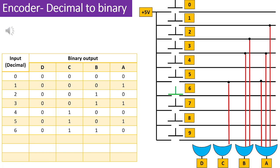Now, suppose we press switch 6, causing it to activate the line on the other side of the switch, resulting in a logic 1. However, given that the binary representation of decimal 6 is 0110 in a 4-bit format, the OR gates with their outputs labeled as input C and B are connected to the switch marked as 6. As a result, when switch number 6 is pressed, the output transforms into 0110.